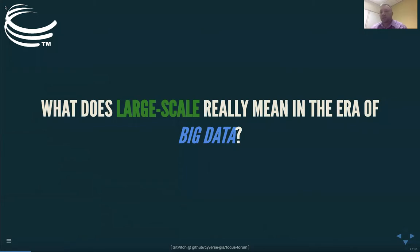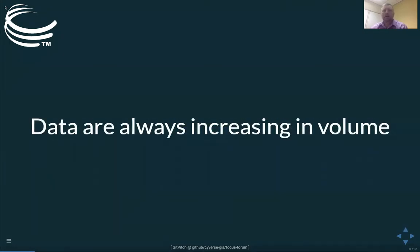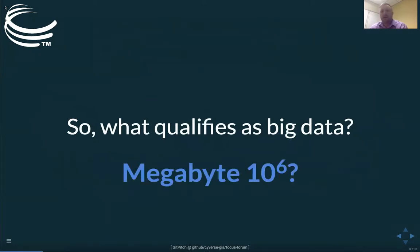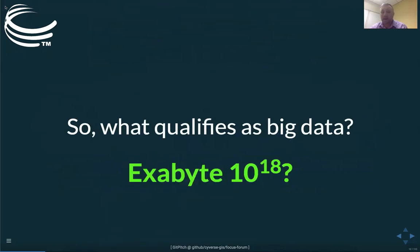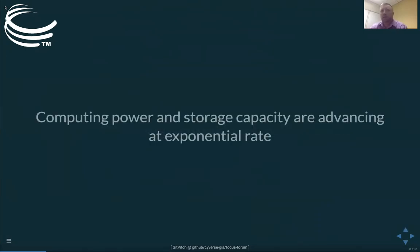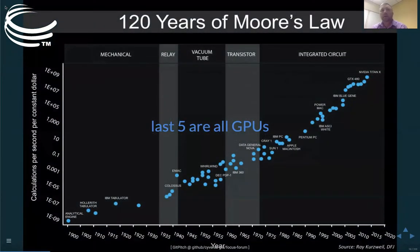What does large-scale data really mean? We hear about big data all the time and we're all faced with the problem that there are always more data — there's an increase in volume. Studies suggest that 90% of all data in human history has been created in the last two years. What really qualifies as big data — is it a megabyte, a gigabyte, a terabyte, a petabyte, an exabyte? A wise person at CyVerse told me that data are just data; don't worry about the size because there's always going to be more. With computing we're seeing an exponential rate of growth — the ubiquitous Moore's Law figure covering over a hundred years shows computing continuously increasing in capacity, and the last five computing advancements are now GPU, moving beyond the CPU era into a new distributed computing period.